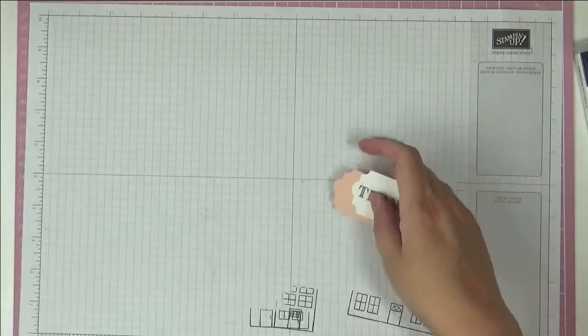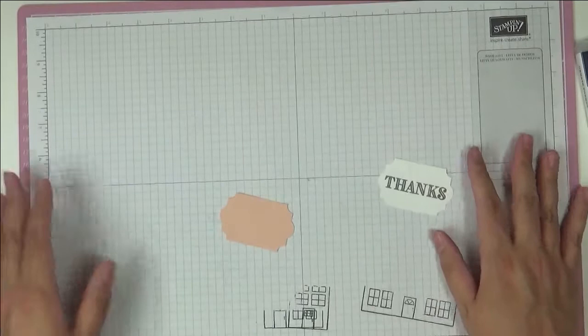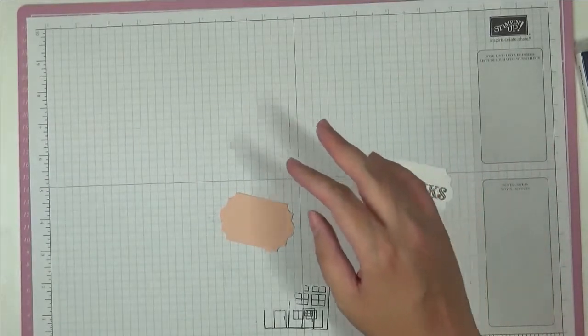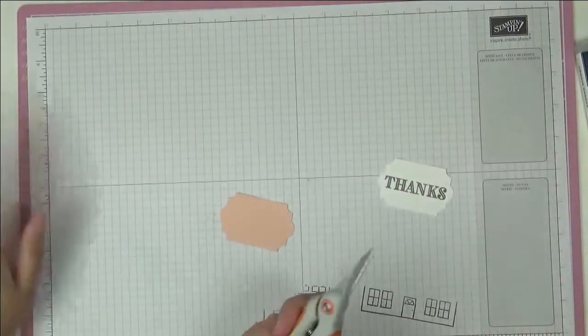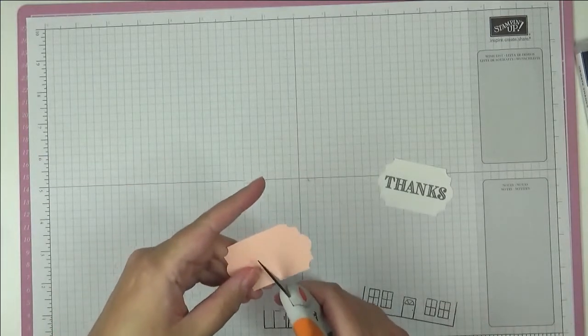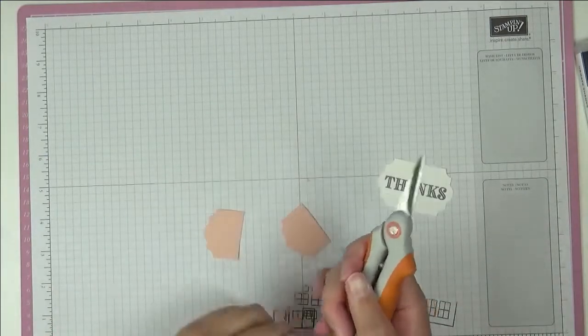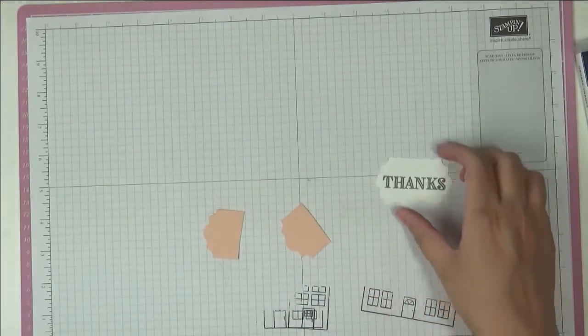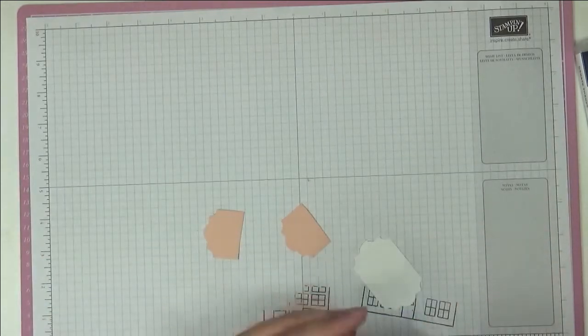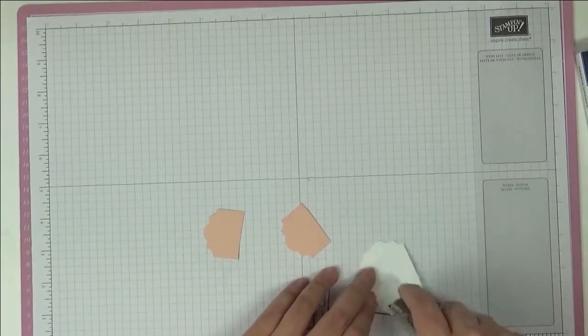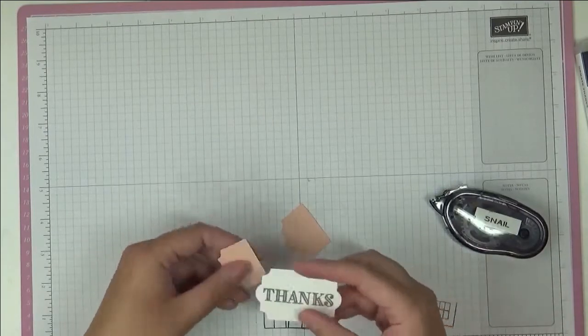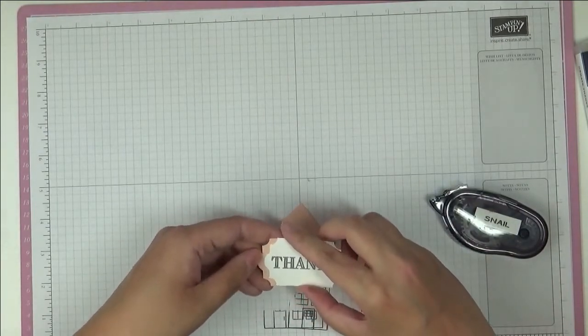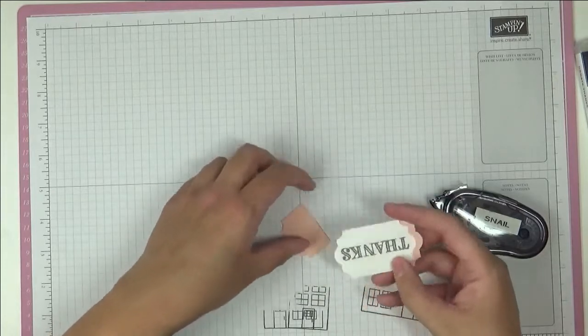Okay, so then all I'm going to do is cut my backing piece here in half and then I'm going to put some Snail adhesive on the back here quickly and we're just going to use our Petal Pink piece to mat, just like that.